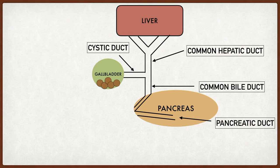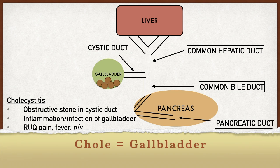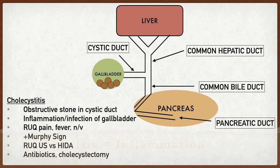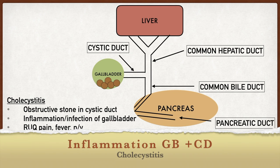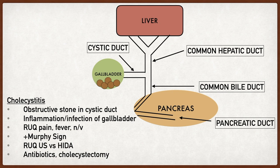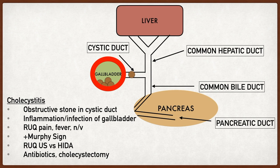Moving on to cholecystitis. Breaking down the word: chole means gallbladder, cyst refers to the cystic duct, and itis means inflammation. So cholecystitis means inflammation of the gallbladder and cystic duct. Occasionally, a stone goes into the cystic duct and gets lodged there — it can't move. This causes prolonged obstruction, and all the content in the gallbladder has nowhere to go, creating a breeding ground for bacteria leading to infection and inflammation. Cholecystitis occurs when a gallstone lodges in the cystic duct, causing prolonged obstruction and inflammation of the gallbladder as well as the proximal portion of the cystic duct up to the point of obstruction.